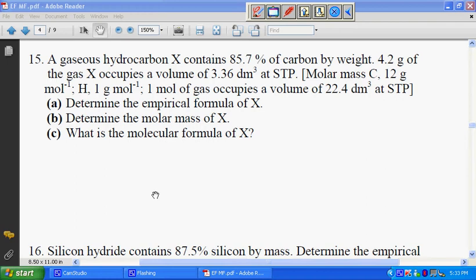Molar mass: carbon, 12 grams per mole. Hydrogen, 1 gram per mole. One mole of gas occupies a volume of 22.4 decimeter cubed at STP. A. Determine the empirical formula of X.